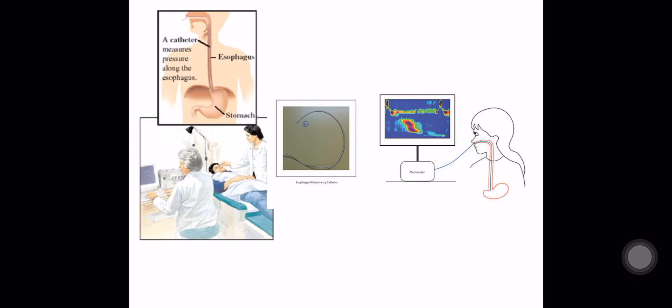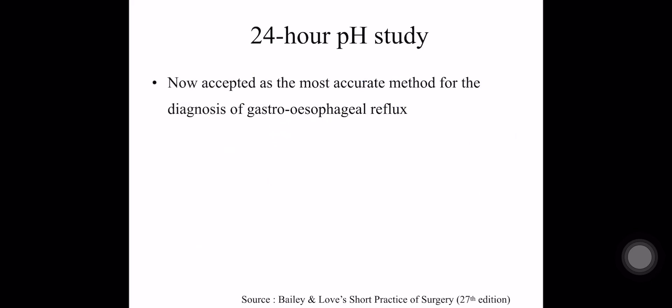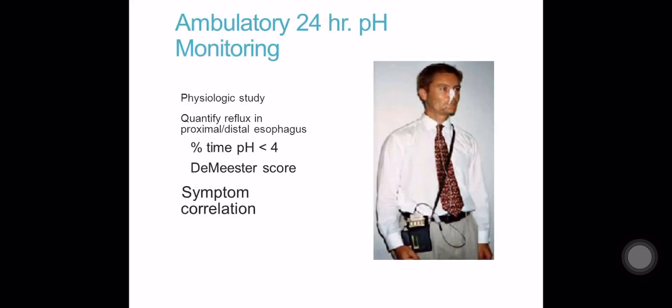In manometry, a catheter measures the pressure along the esophagus and is connected to a monitor. The next one is the 24-hour pH study. It is now accepted as the most accurate method for the diagnosis of gastroesophageal reflux disease.